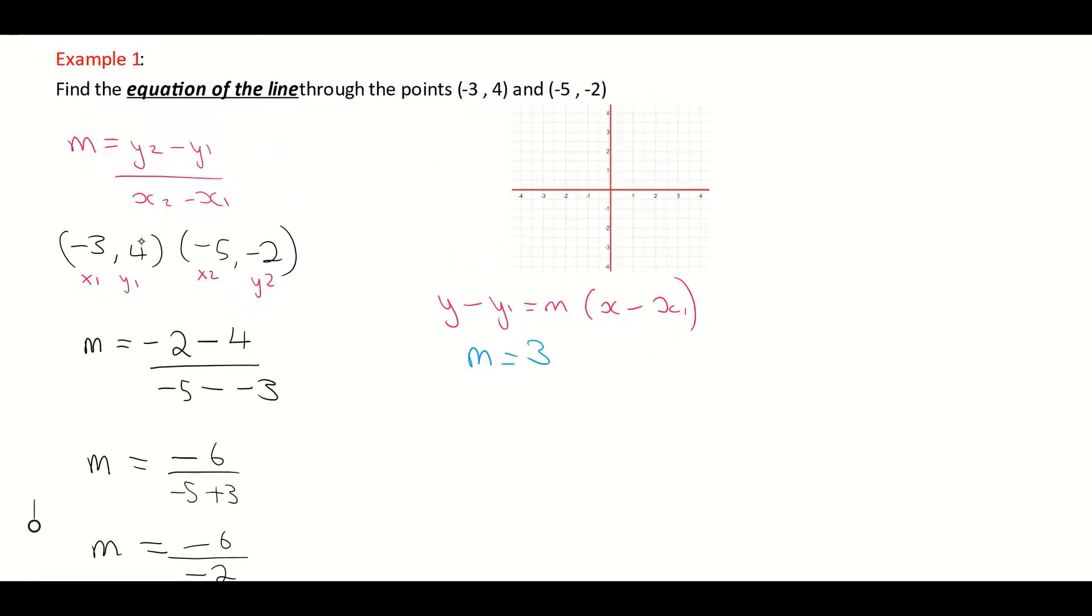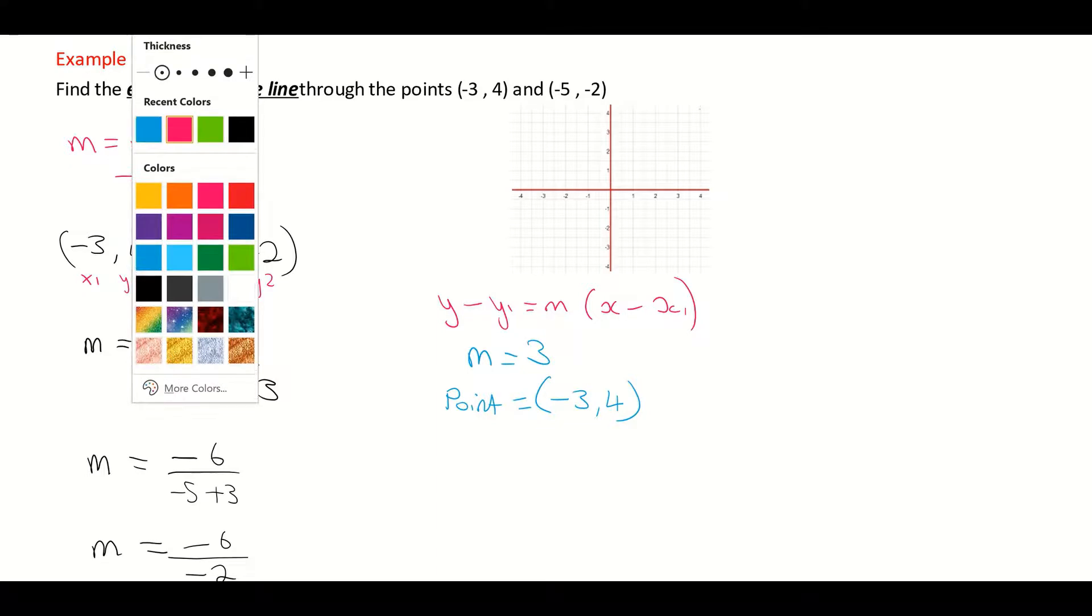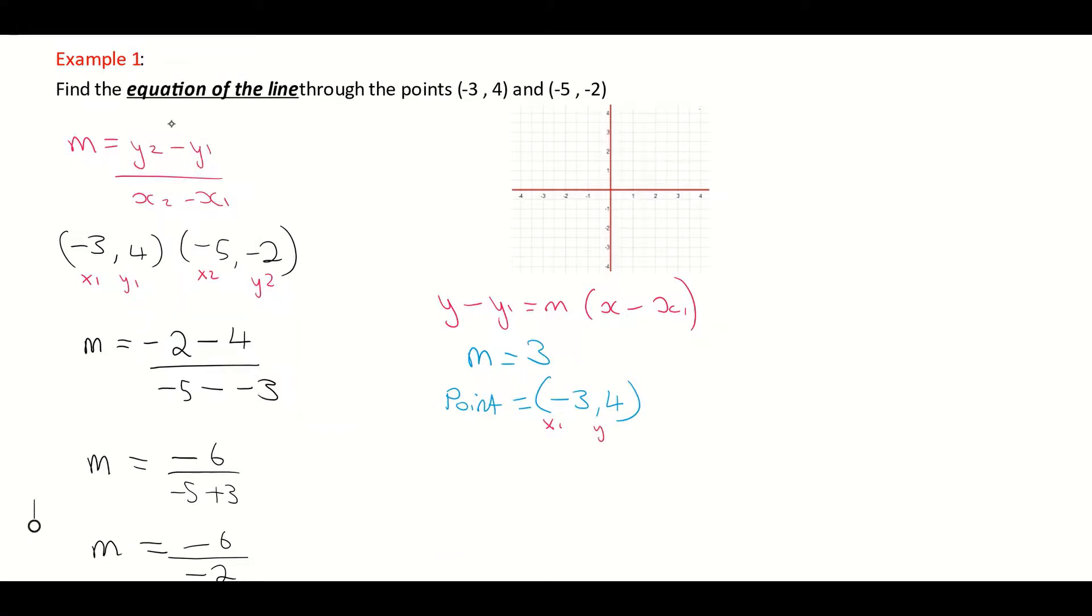And the point I'm using, you can use either of the two points. I'm going to stick with the one that I labeled as x1, y1. So the points that I'm using is minus 3, 4. You can use the other point if you want. I'm going to label that then as my x1, y1.